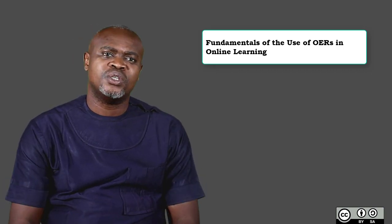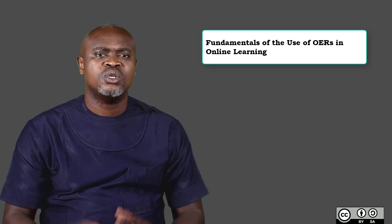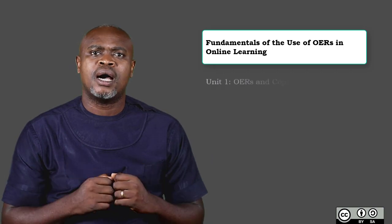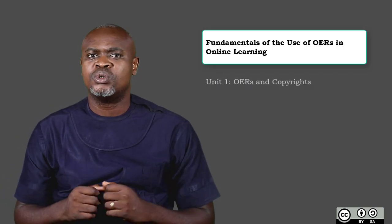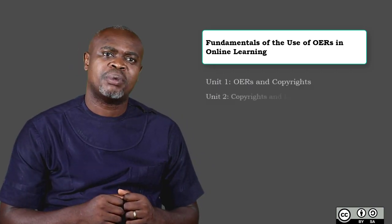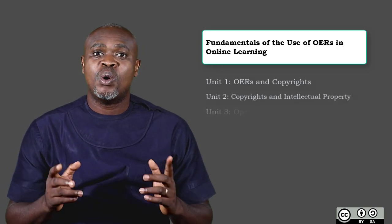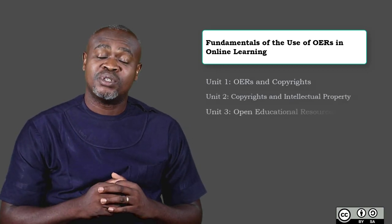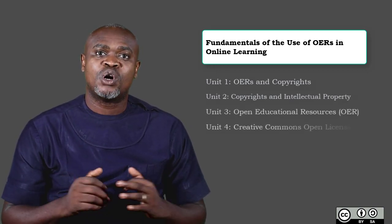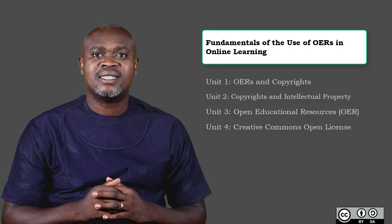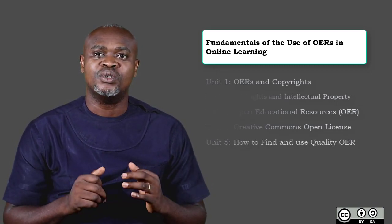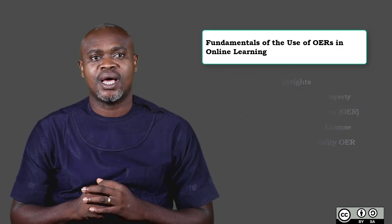which consists of the following units. Unit 1: OER and Copyright. Unit 2: Copyright and Intellectual Property. Unit 3: Open Educational Resources OER. Unit 4: Creative Common Open Licenses. Unit 5: How to Find and Use Quality OER.